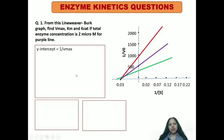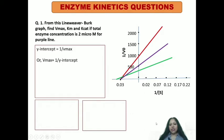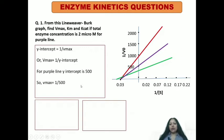You will first think about the y-intercept, which is equal to 1 upon Vmax — we have studied this. So Vmax is equal to 1 upon y-intercept. Intercept means the dot where the slanting line joins or touches the straight line. We need to find Vmax from this graph, which is equal to 1 upon y-intercept. For the purple line, the value of y-intercept is 500.